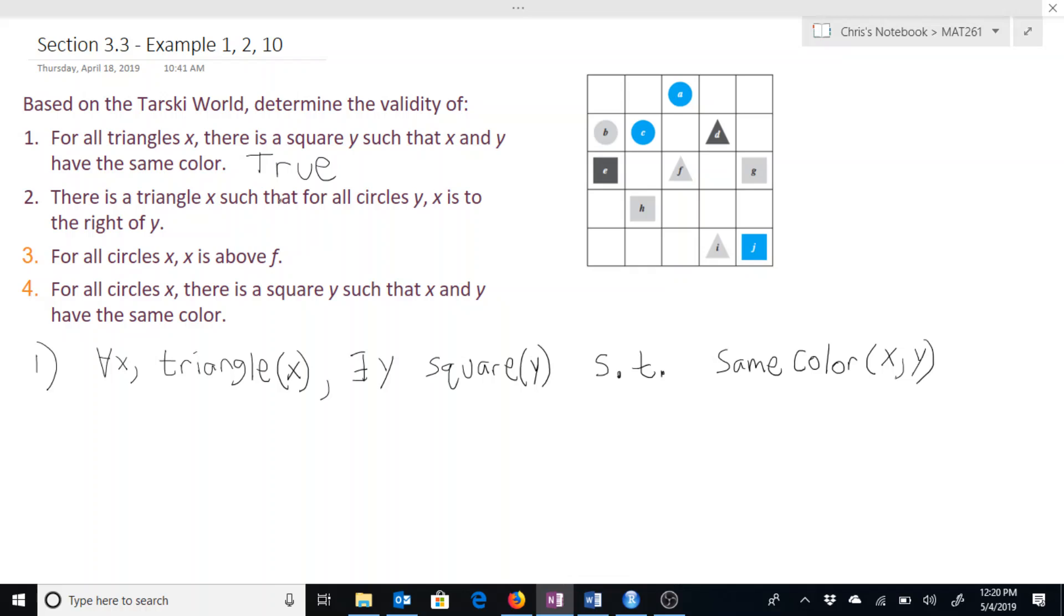For statement two: there is a triangle x such that for all circles y, x is to the right of y. So if we look at this, we have the three triangles here. Since the first quantified statement says there is a triangle such that all the circles are to the right of that triangle, we could see both d and i, triangles d and i, both of those satisfy that condition.